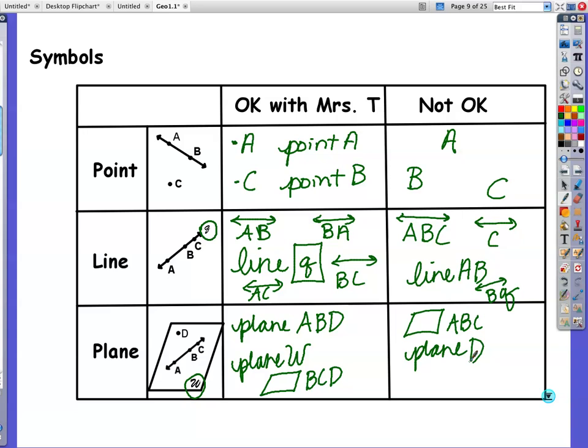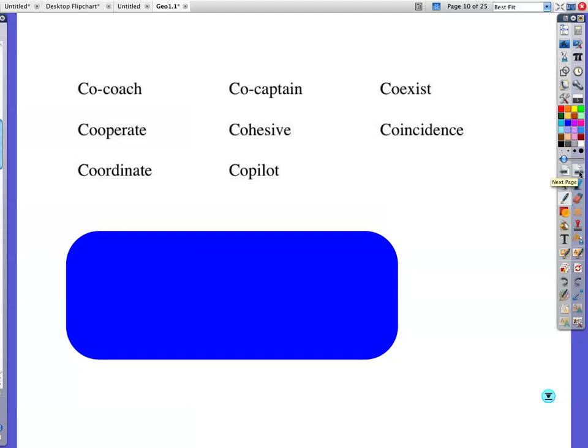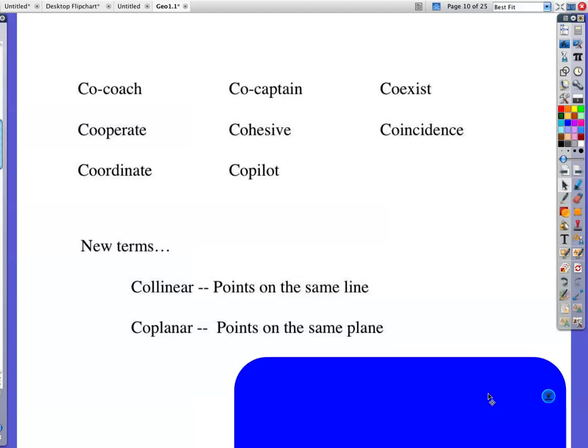There's probably a lot of variations there. But you can use the symbol, then you can use the word. Either one. All of these have something in common. Co-coach, co-captain, coexist, cooperate, cohesive, coincidence, coordinate, co-pilot. Usually it means two or more people working together, generally. Something like that. Two or more. So when we see this new term, collinear, we're talking about two or more points on the same line. Two or more points on the same line are collinear.